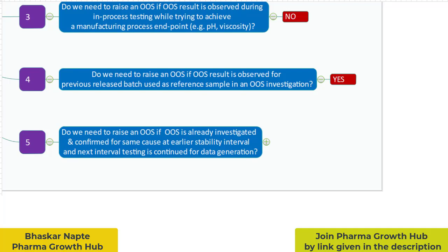Since you already have the historical information that this parameter was out of specification at the 12th month time point, for all future time points — whether 18th or 24th month — if the same parameter is out of specification, you need not investigate the failure using the out-of-specification procedure. There is no necessity to use the OAS procedure in this case.